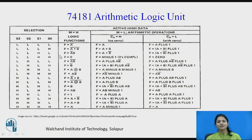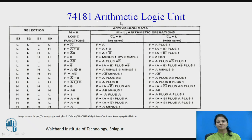The next selection — low, low, high, low — gives A-bar·B. These are the different logic functions we can calculate using the selection inputs on the 74181 ALU unit.